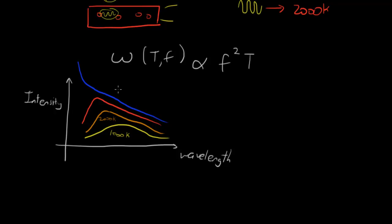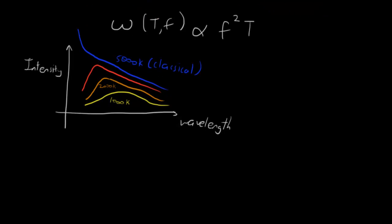And according to this theory, according to the classical theory, we'll write this down, classical in brackets, according to the classical theory, this line will go all the way up into infinity. And this is basically the ultraviolet catastrophe. Because we know that the intensity of the light cannot go all the way up to infinity.